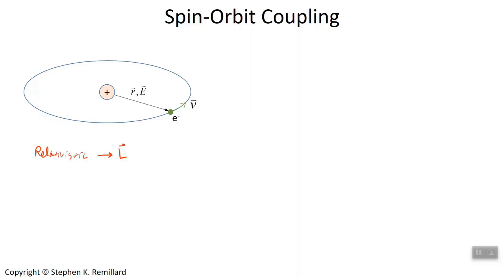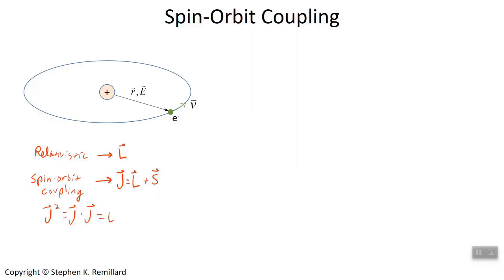In this video, we're going to talk about another correction called the spin-orbit coupling, which gives you a splitting as a result of the total angular momentum J. Remember J is L plus S. It's called spin-orbit coupling because of the coupling between L and S. The key term in this treatment is going to be the cross term when we look at J squared. You square a vector — that's the dot product of that vector — and of course that gives you L squared plus S squared plus 2L dot S. That cross term is the key feature we will talk about today.